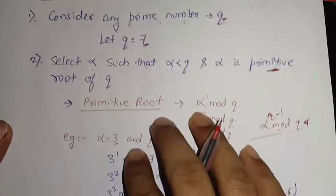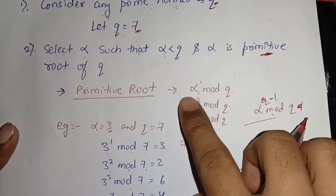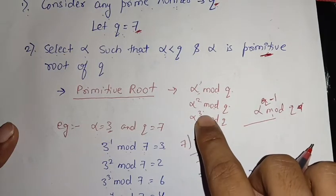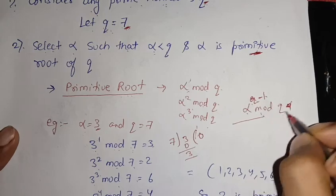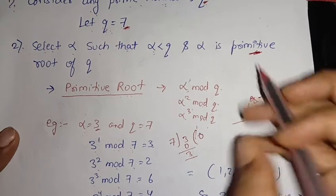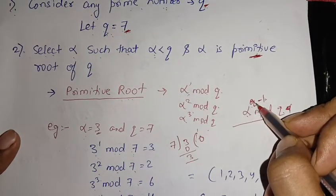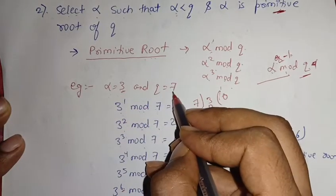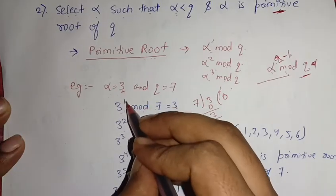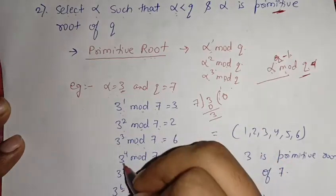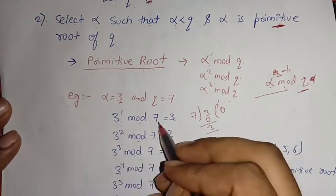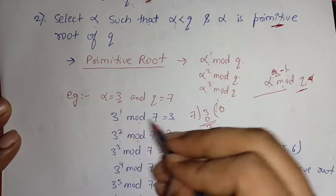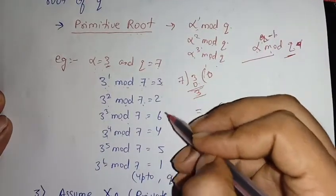A primitive root means computing alpha^1 mod Q, alpha^2 mod Q, alpha^3 mod Q, all the way up to alpha^(Q-1) mod Q. Since Q is 7, we go up to alpha^6. For our example, alpha is 3 and Q is 7, so we compute 3^1 mod 7, 3^2 mod 7, 3^3 mod 7, 3^4 mod 7, and so on. The results we get are 3, 2, 6, 4, 5, 1.